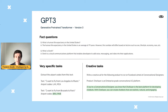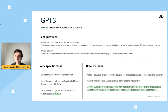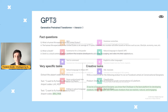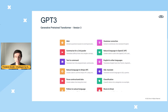GPT-3 can also be quite creative. I asked it to write creative ads for Facebook given a product description, and it came up with a nice ad — even using the word 'chatbot' without being told Chat Layer was a chatbot platform. There are many more tasks: converting a movie title to emojis, summarizing a document for a second grader, or translating natural language into an SQL query.